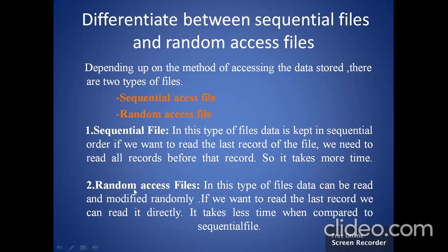The next one is the random access file. In this type of file, data can be read and modified randomly. If we want to read the last record, we can read it directly. It takes less time when compared to a sequential file. So this is the difference between sequential file access and random file access.